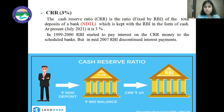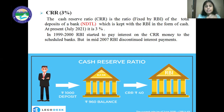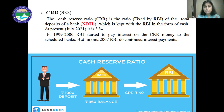In a deflationary situation, the RBI will do the vice versa — they will decrease the CRR ratio. In 1999–2000, the RBI started to pay interest on the CRR money to scheduled banks. But in 2007, the RBI discontinued this interest payment facility.